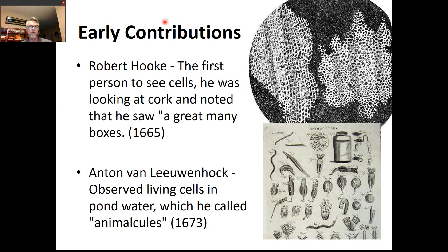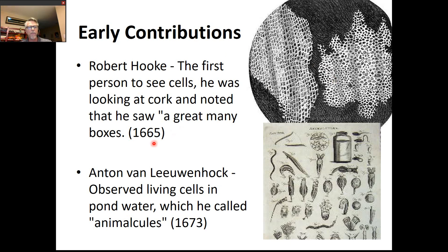The first person we talk about is Robert Hooke. He was the first person to see cells, although he did not call them that at the time. He was looking at cork — which comes from tree bark — and he saw these tiny little squares. He called them 'little boxes,' and that was back in 1665.